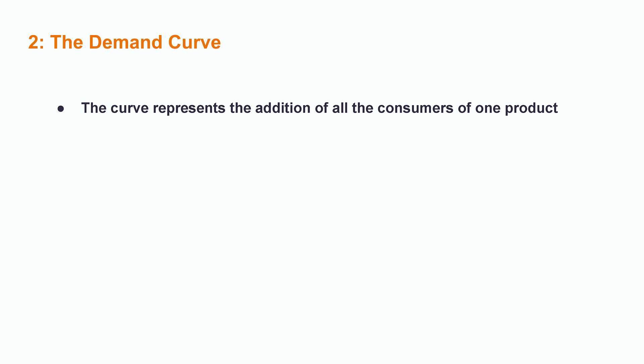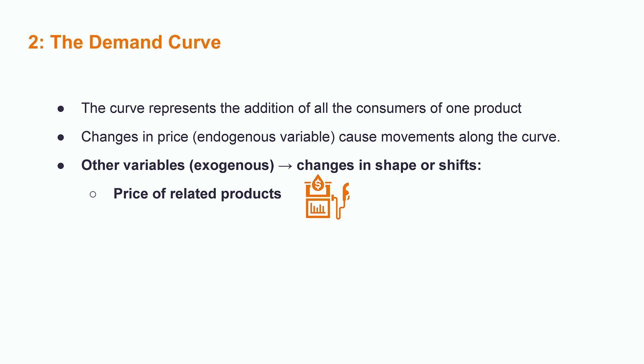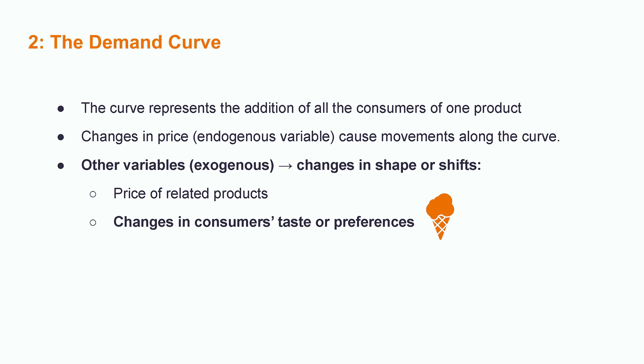So far we've seen how the demand curve is constructed, and that it represents the addition of all consumers of one product. We've also seen that with changes in price, the quantity demanded will change, causing movements along the curve. But there are more variables that affect the demand curve, and changes in those variables can shift the curve itself. For example, the price of related products — imagine the oil price increased by 500%, do you think people will still be buying cars in the same way? Consumer tastes and preferences may also change: this could be seasonal, like buying less ice cream in winter, or changes in fashion trends, or tastes shifting due to an aging population.